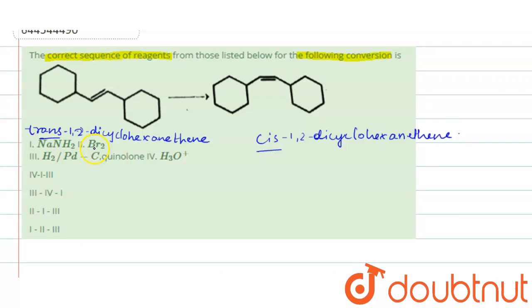First we made use of bromine, so first will be 2. After that NaNH2, that's 1. And after 1, reduction, that is 3. So the correct sequence will be 2-1-3. Look at the options: 4-1-3? No. Second one, 3-4-1? No. 2-1-3? Yes, option C will match with 2-1-3. So option C is the right answer.